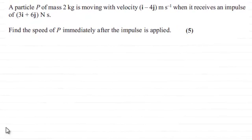Hi. Now for this question we're given that a particle P of mass 2 kilograms is moving with a velocity of i minus 4j meters per second when it receives an impulse of 3i plus 6j newton seconds. And we've got to find the speed of P immediately after the impulse is applied for five marks.